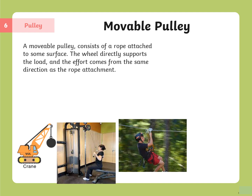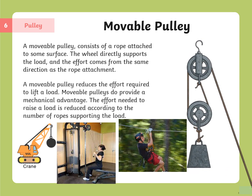A movable pulley consists of a rope attached to some surface, where the wheel directly supports the load and the effort comes from the same direction as the rope. A movable pulley reduces the effort required to lift a load — the effort needed is reduced according to the number of ropes supporting the load. Examples of movable pulleys include a crane, gym equipment, and a line rope.